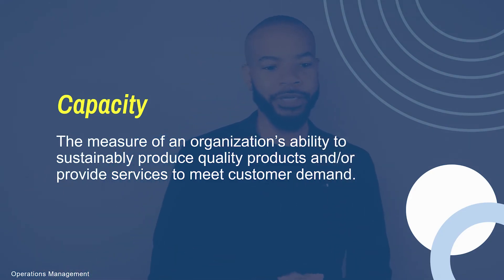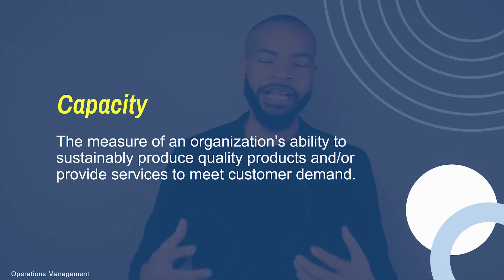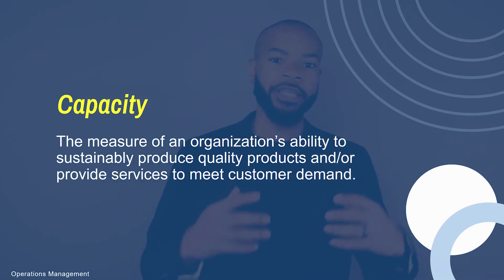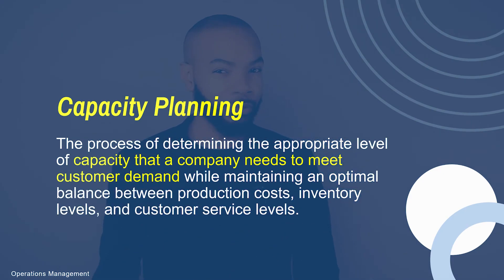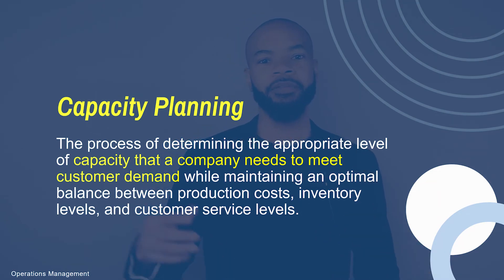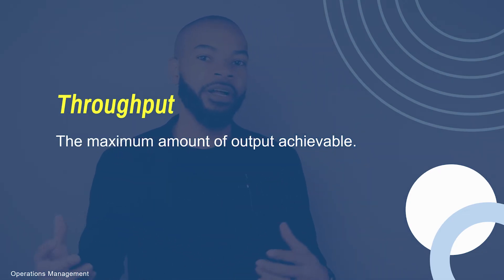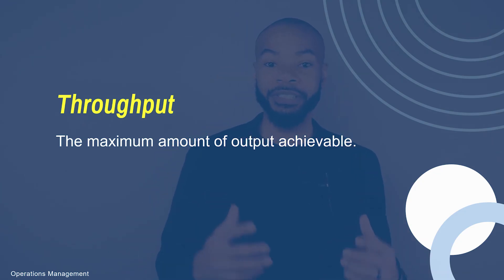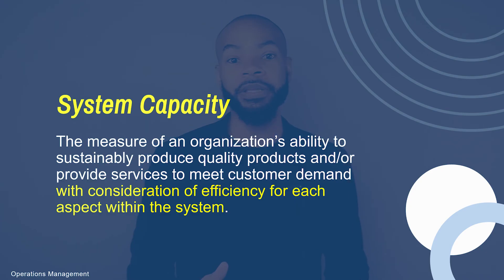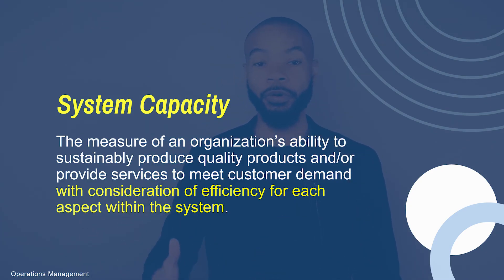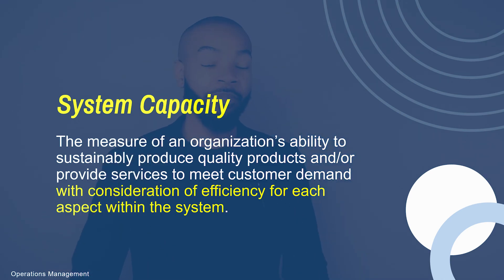Key takeaways: capacity planning is really about measuring how a company can sustainably produce to meet customer demand for products and services. In doing that, they must consider their throughput — their maximum rate of output — and their system capacity. They need to identify which department may be causing low output or slow production time, because the department with the lowest throughput drives the throughput for the entire system.